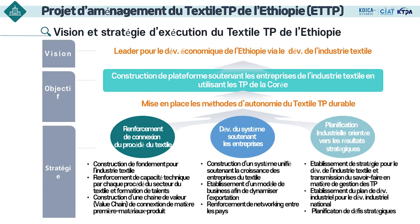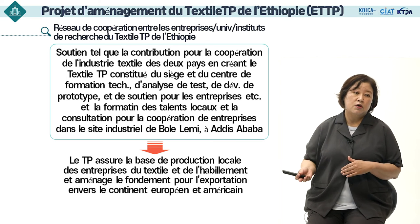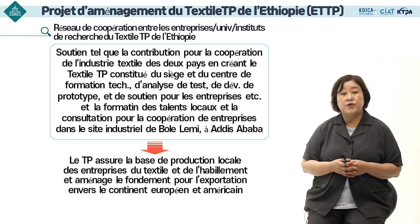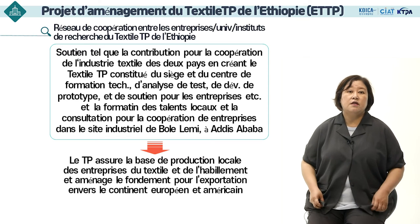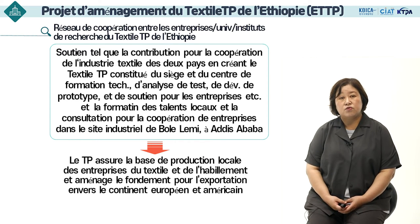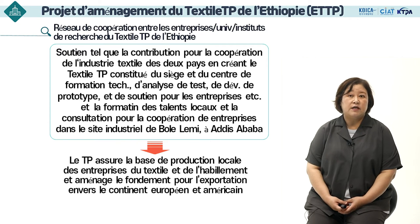En établissant une plateforme intégrée pour soutenir les entreprises textiles utilisant le modèle de technoparc coréen, nous mettons en place l'organisme ayant comme vision de diriger le développement économique global de l'Éthiopie en soutenant l'industrie textile. Ce projet consiste à contribuer à la coopération dans l'industrie textile et de l'habillement entre la Corée et l'Éthiopie en créant un textile technoparc composé d'un siège social, d'un centre de formation technique, d'un centre de tests et d'analyses, d'un centre de développement de prototypes et d'un centre de soutien aux entreprises.